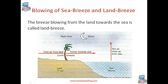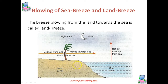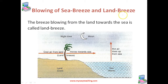The land becomes cool very quickly but the sea water remains warm for much longer time. So during the night, the hot air over the warm sea rises upwards and cooler air from the land blows towards the sea in the form of breeze. The breeze blowing from land towards the sea is called as land breeze. Sea breeze takes place during the daytime and land breeze takes place during the night time.